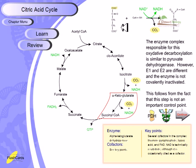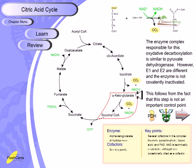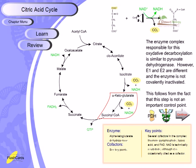The enzyme complex responsible for this oxidative decarboxylation is similar to the pyruvate dehydrogenase complex; however, E1 and E2 are different, and the enzyme is not covalently inactivated as seen with pyruvate dehydrogenase. Like the PDH complex, it generates carbon dioxide, reduces NAD+ to NADH, and attaches CoA, but varies in enzymatic structure — which means this step is not an important control point of the cycle.